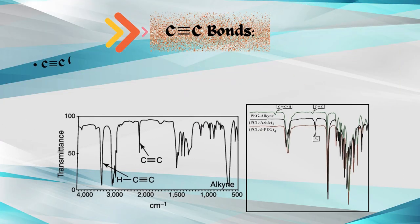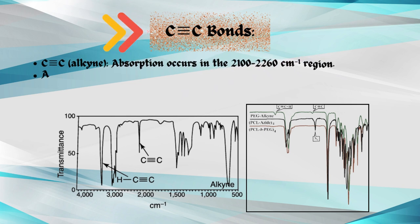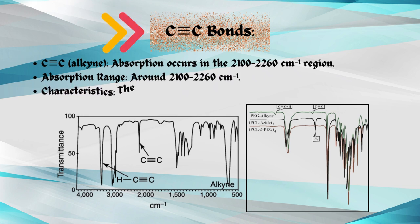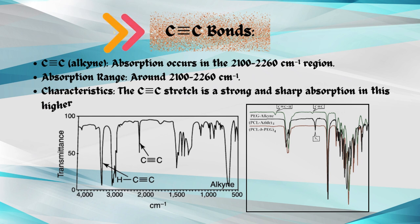Carbon-carbon CC triple bonds. Carbon-carbon CC bond in alkyne: absorption occurs in the 2,100 to 2,260 per centimeter region. Absorption range around 2,100 to 2,260 per centimeter. Characteristics: the CC triple bond stretch is a strong and sharp absorption in this higher frequency range.